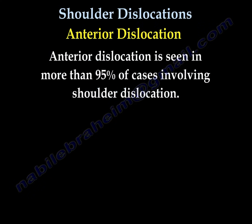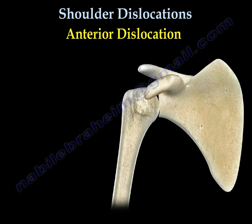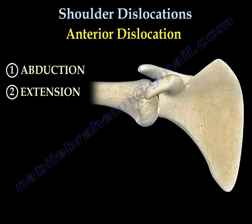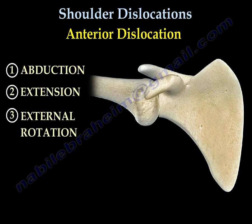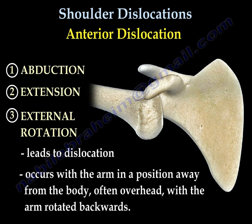Anterior dislocation is the most common dislocation. The mechanism is abduction, extension, and external rotation of the arm. Here you can see the mechanism of abduction, extension, and external rotation that leads to the dislocation. The arm will be in a position away from the body, often overhead with the arm rotated backwards.